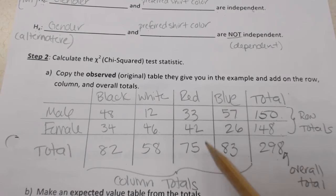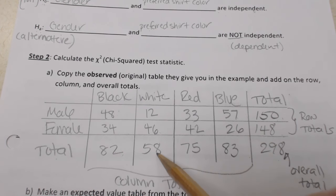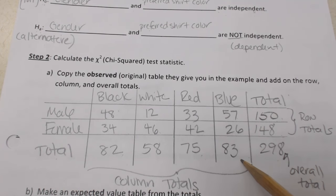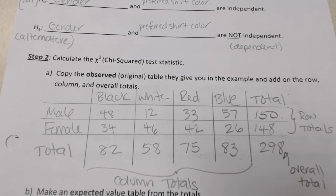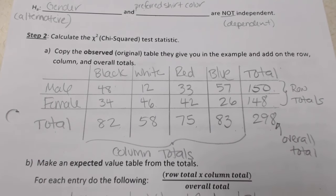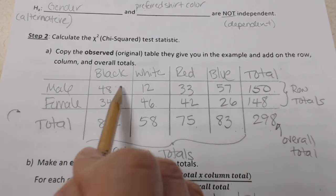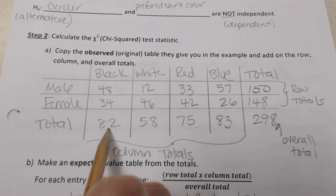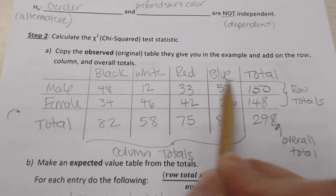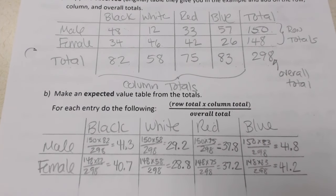For our column totals: 48 + 34 = 82 people preferred a black shirt, 58 preferred white, 75 preferred red, and 83 preferred blue. Now that we have row totals and column totals, we can move to part B: making an expected value table. For each entry, we multiply the row total by the column total and divide by the overall total. For male preferring black: 150 times 82, divided by 298.